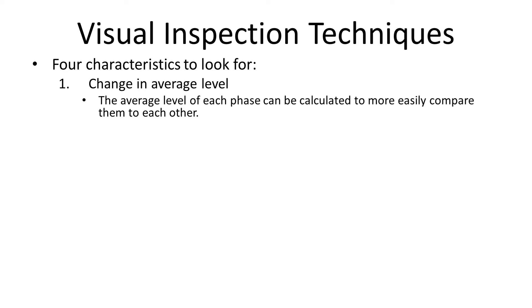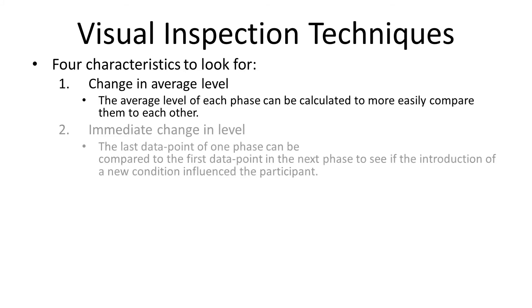The first is potential changes in the average level. If the average level of one phase in your experiment is different from another phase, that might indicate something interesting is happening. Another thing to look for is any kind of immediate changes in level — if you see the data dramatically shift, like a big jump from one phase to another, that would indicate you may have found something interesting.